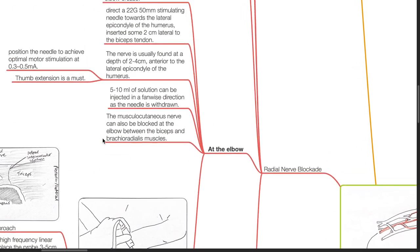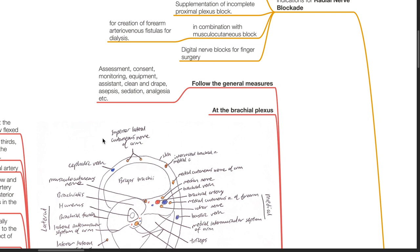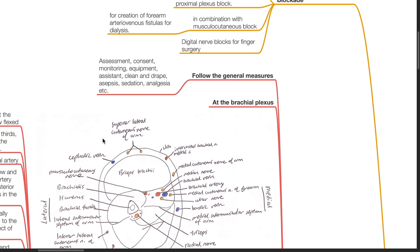Radial nerve block. Follow the general measures as in the brachial plexus block videos. The radial nerve can be blocked at the level of the brachial plexus.